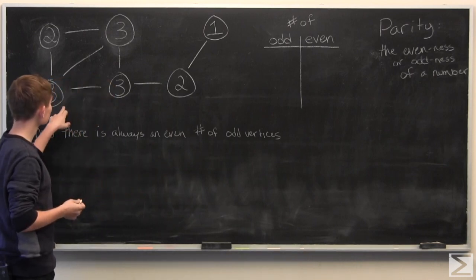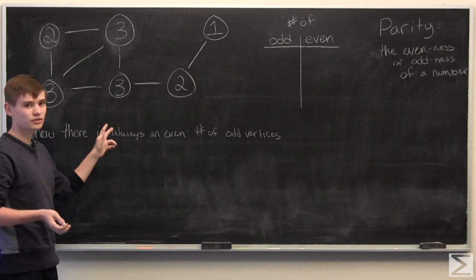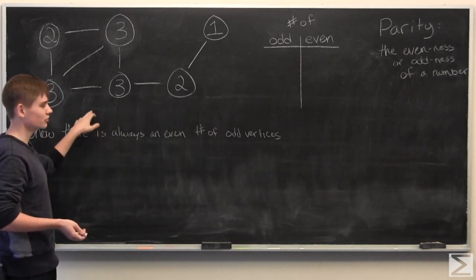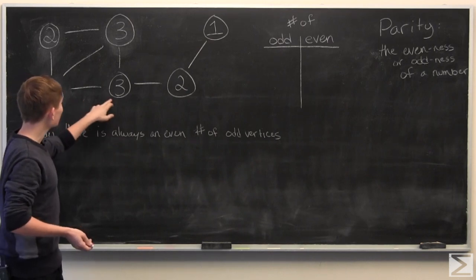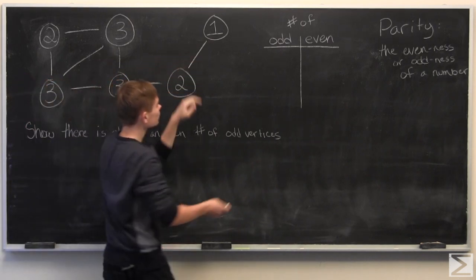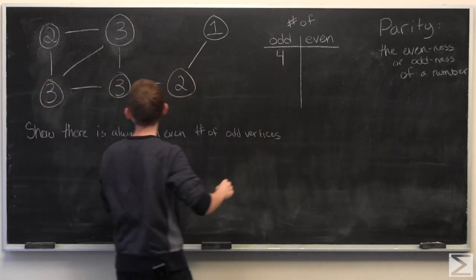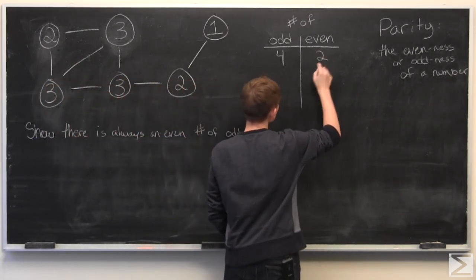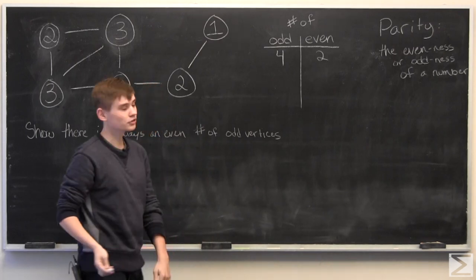So to start, let's just count the number of odd vertices and number of even vertices to make sure that this holds true for this base case. So there's four odd vertices and there are two even vertices. So there's an even number, which is good.